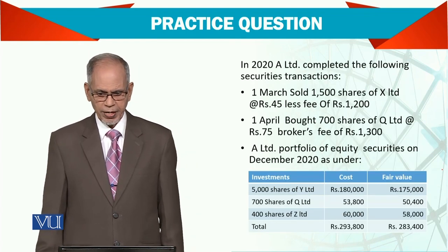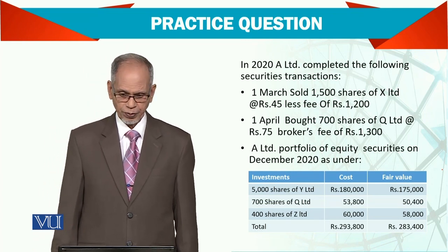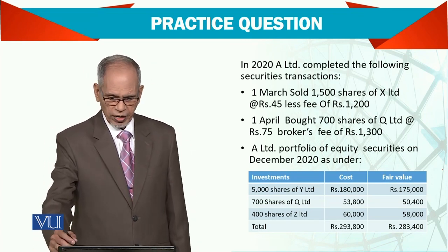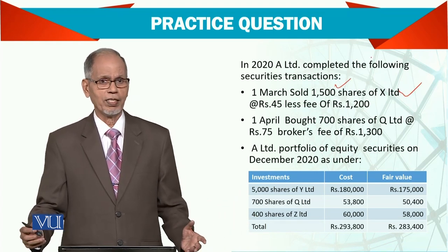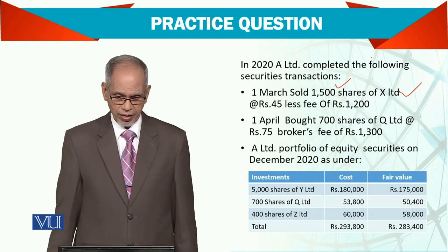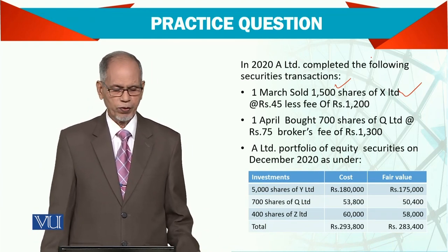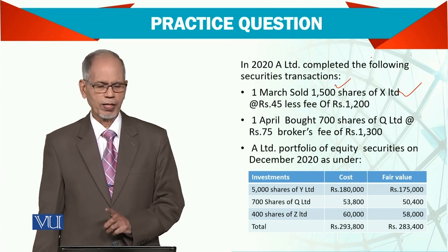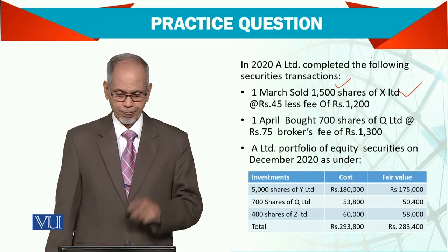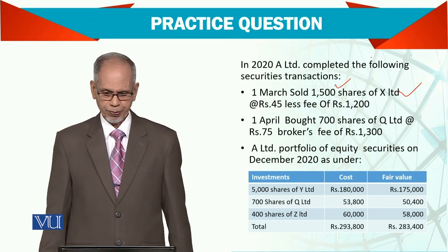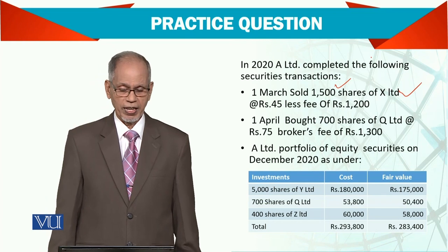Now in 2020, A Limited completed the following transactions. They sold X Limited shares — all 1500 shares at the rate of 45 per share, with a fee of 1200 as a commission. When you are selling, this fee is reduced from the proceeds.